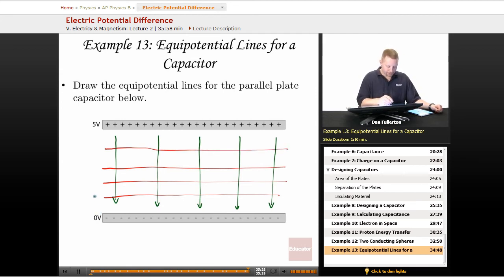And if this is 0 volts, that'll be maybe 1, 2, 3 volts, 4 volts, 5 volts. We've got a constant electric field between these, but we don't have a constant potential. The potential is going to have a linear gradient from 5 volts down to 0 volts.